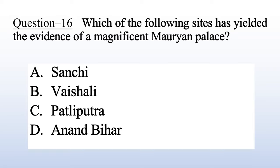Question 20: Which of the following sites has yielded the evidence of a magnificent Mauryan palace? A. Sanchi, B. Vaishali, C. Pataliputra, D. Anand Bihar. Answer is C: Pataliputra.